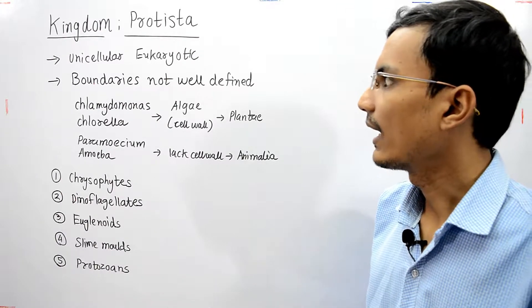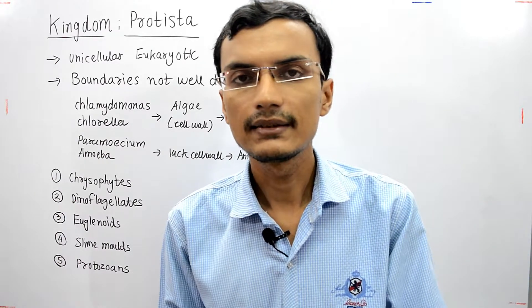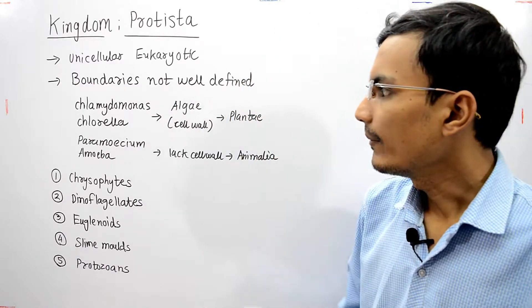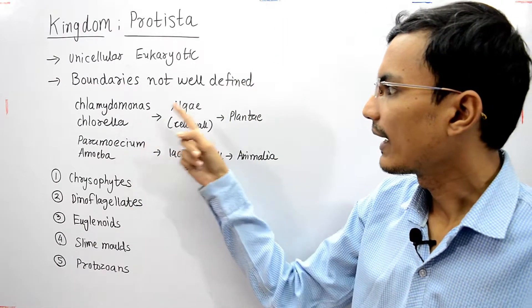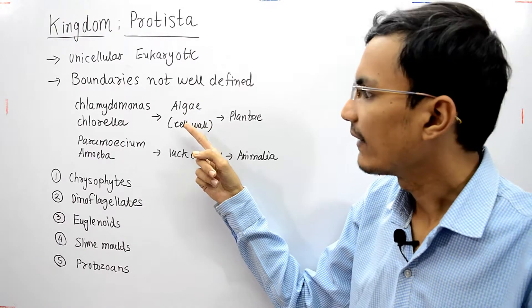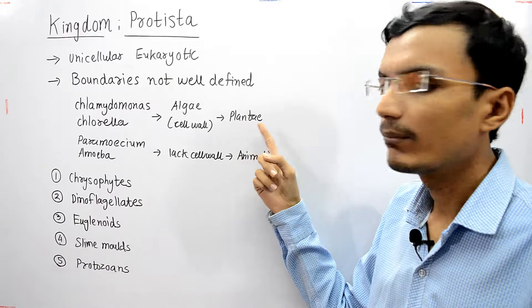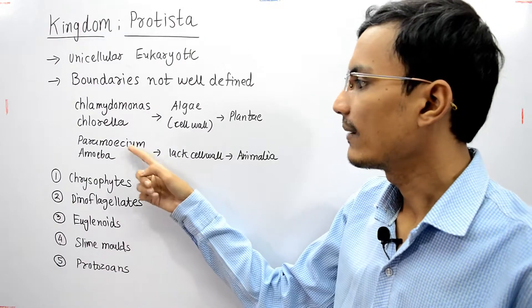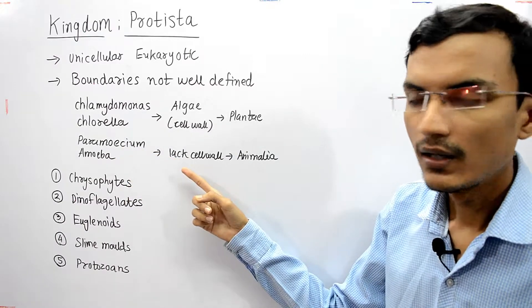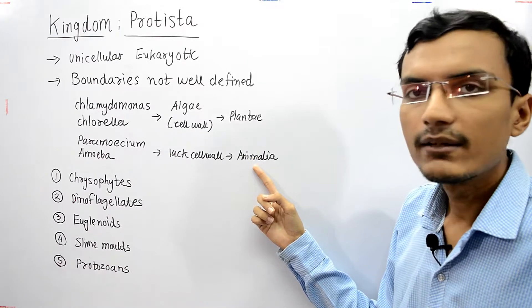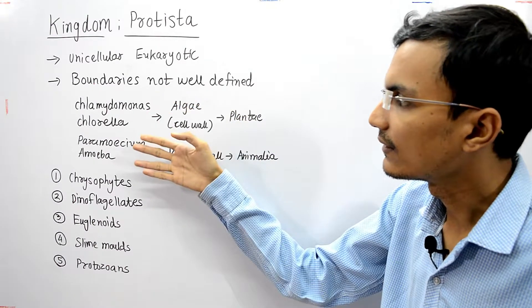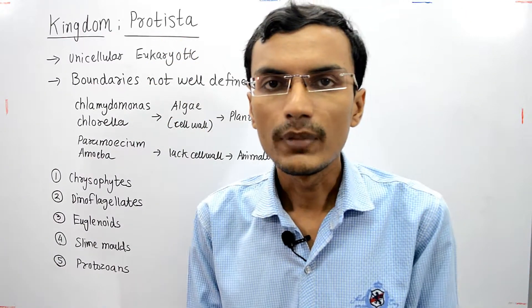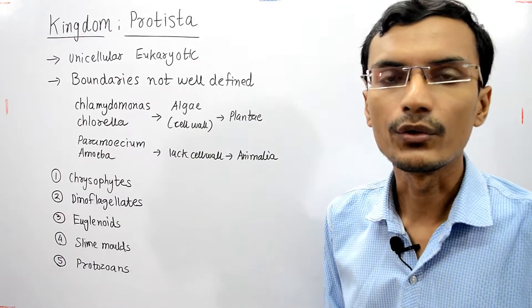The boundaries of this kingdom are not well defined. For example, Chlamydomonas and Chlorella — these two are algae and they have a cell wall, so they were earlier classified under Kingdom Plantae. And Paramecium and Amoeba, which lack a cell wall, were earlier classified under Kingdom Animalia. These organisms are now brought together under Kingdom Protista because they are all unicellular eukaryotic organisms.